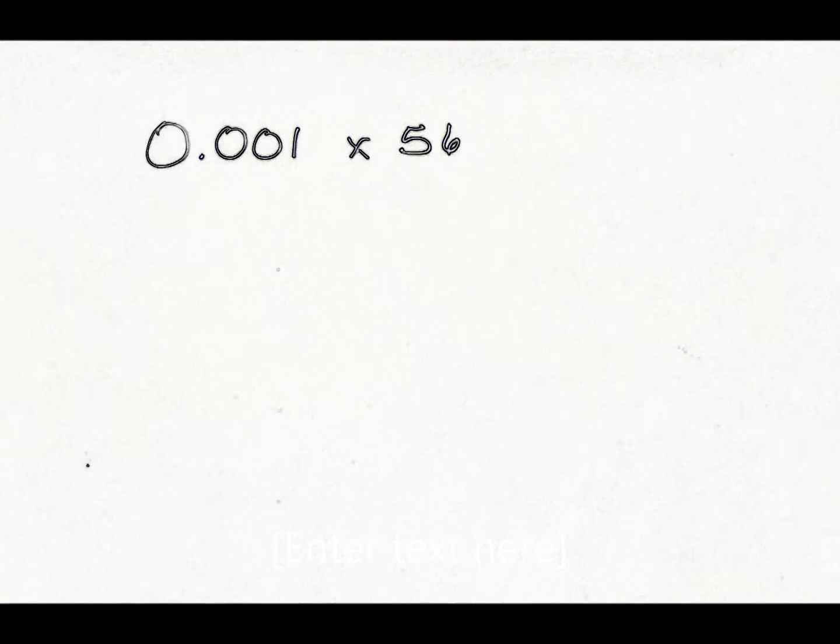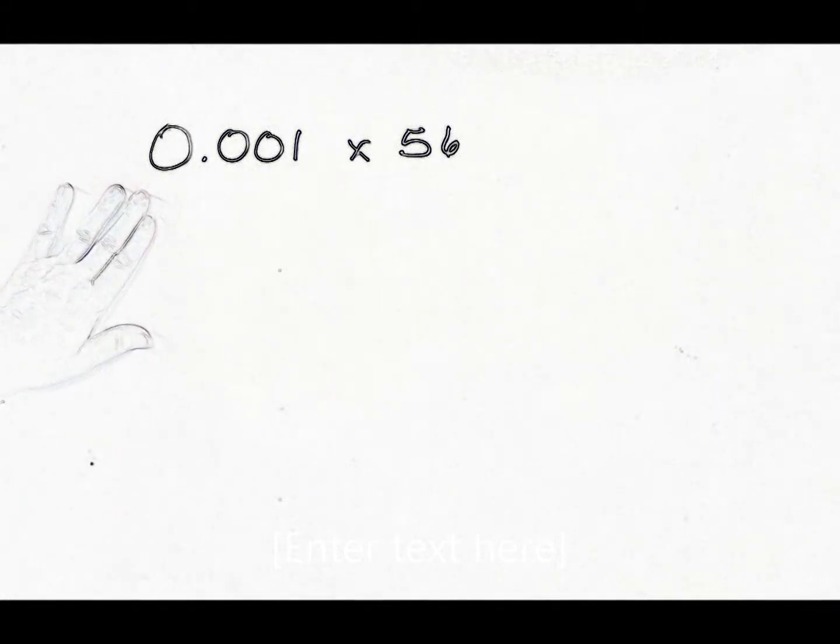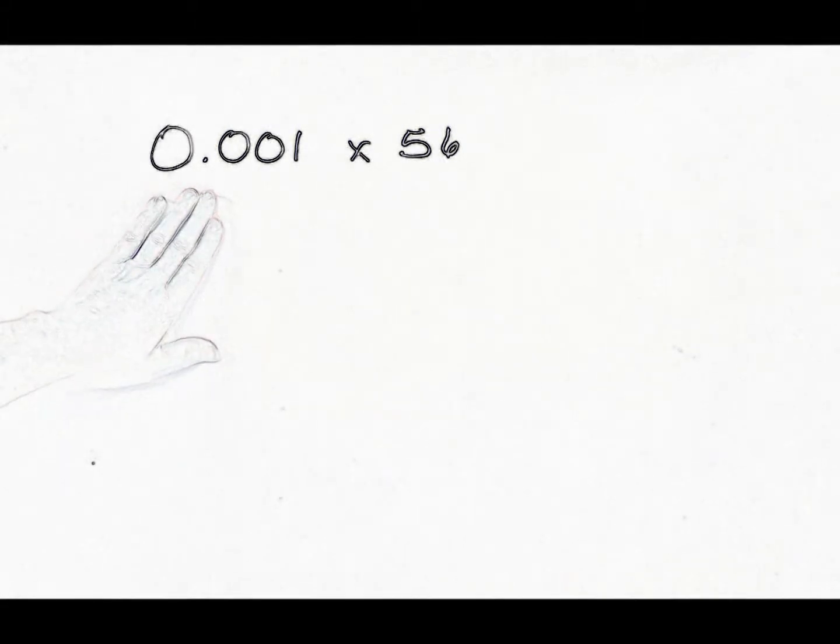Hi, everyone. Welcome to Multiplying Decimals Part 2. Let's take a look at this problem. We have 0.001 times 56.